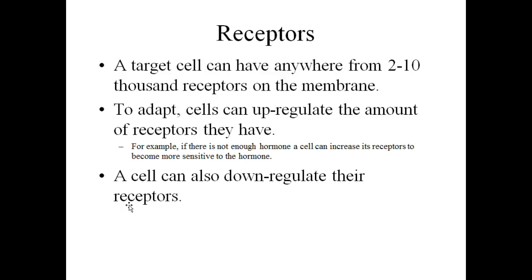Hormones are essentially chemicals that are going to affect an area somewhere else in the body. How does a particular hormone affect the target cell? Because the target cells are the ones that have the receptors for that particular hormone. A target cell could have anywhere from a couple thousand up to 10,000 receptors.